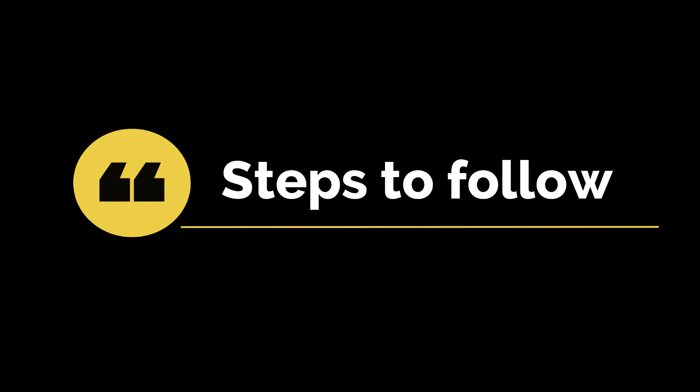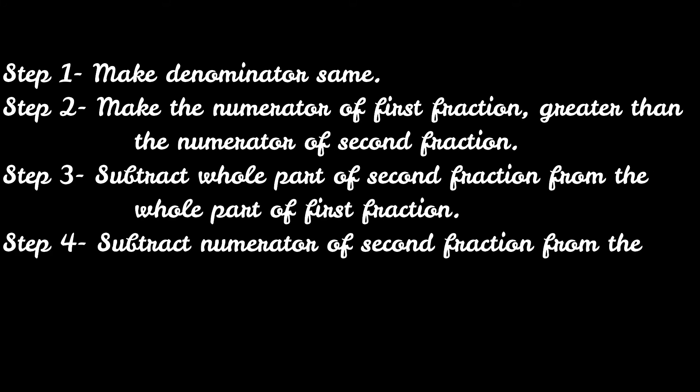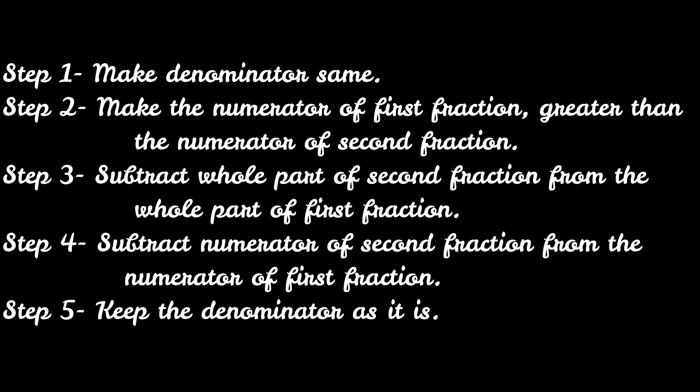Here are the steps we are going to follow. Step 1: Make the denominator same. Step 2: Make the numerator of the first fraction greater than the numerator of the second fraction. Step 3: Subtract the whole part of the second fraction from the whole part of the first fraction. Step 4: Subtract the numerator of the second fraction from the numerator of the first fraction. Step 5: Keep the denominator as it is.